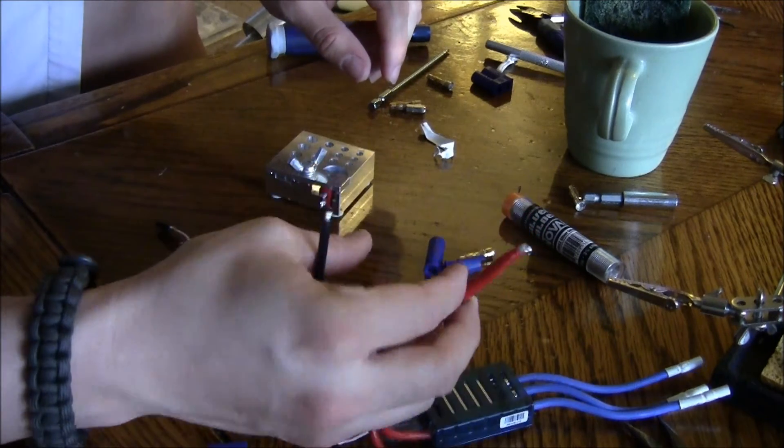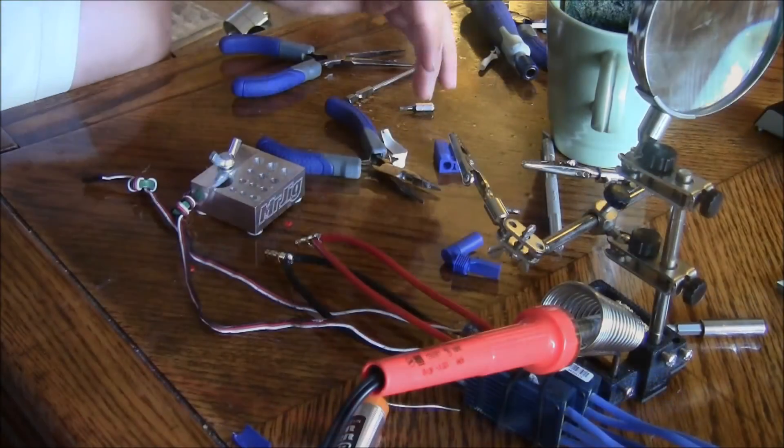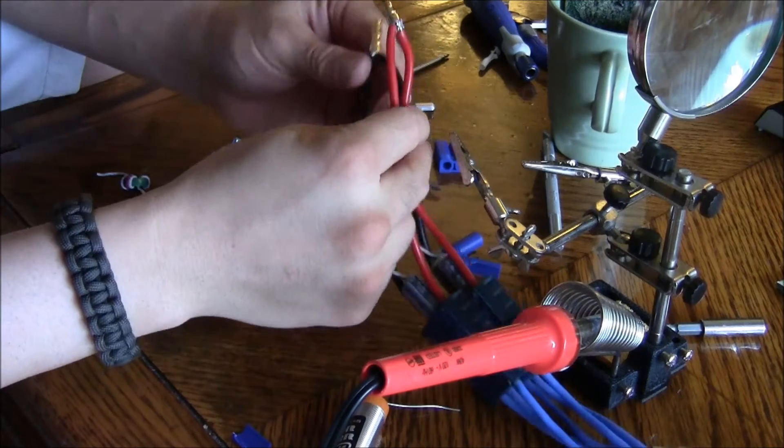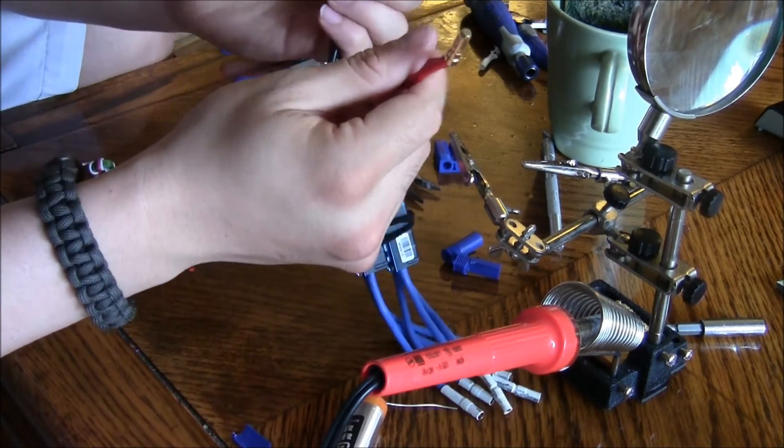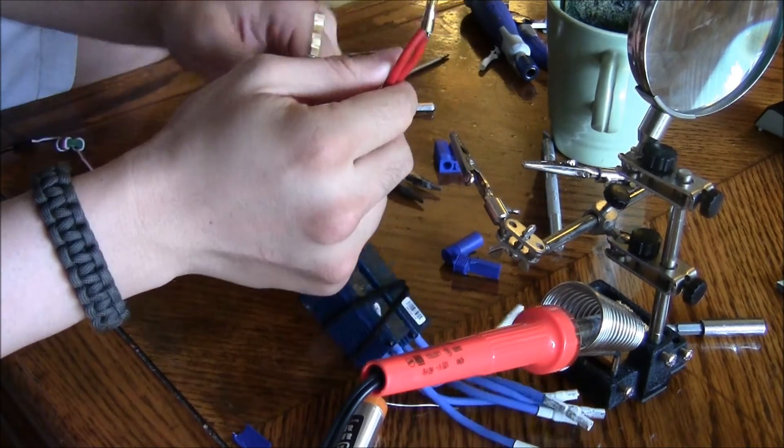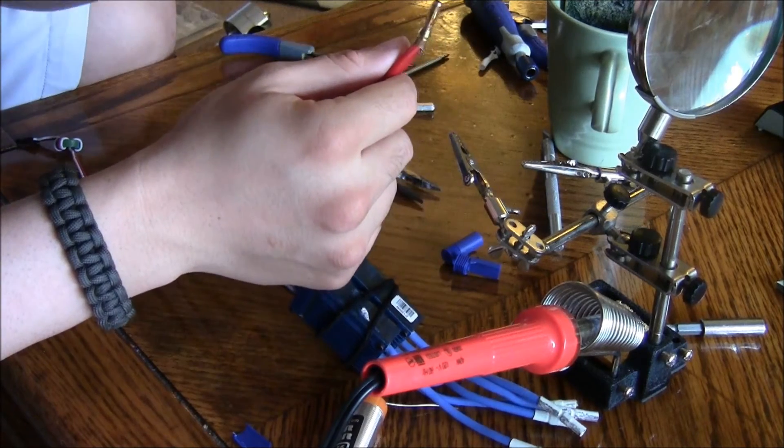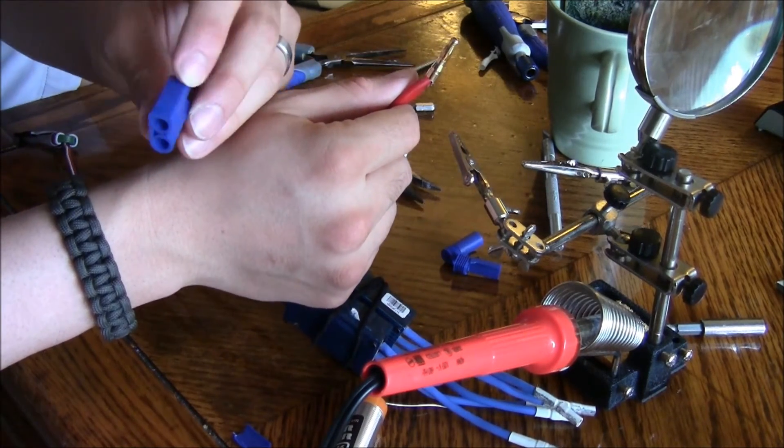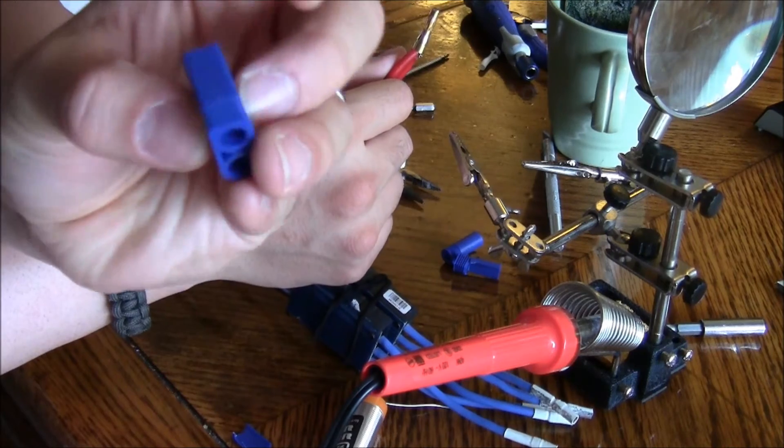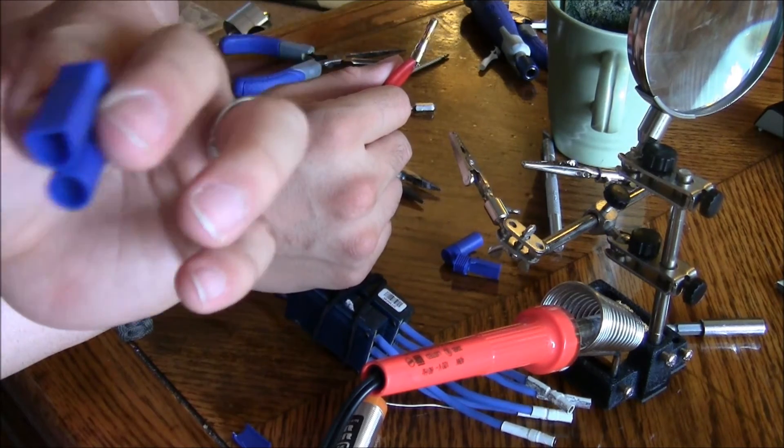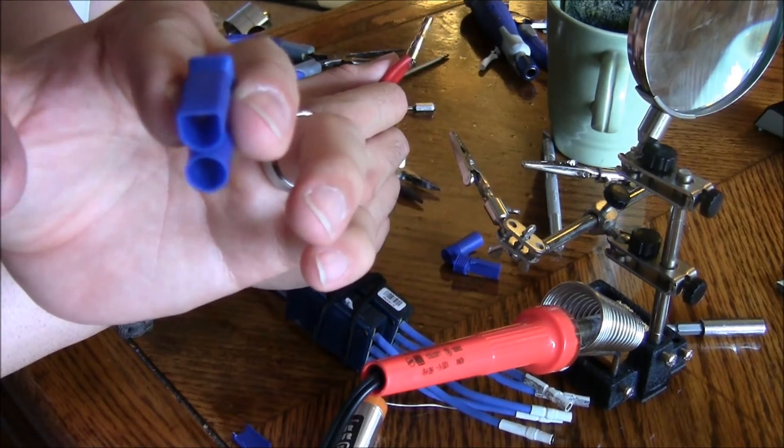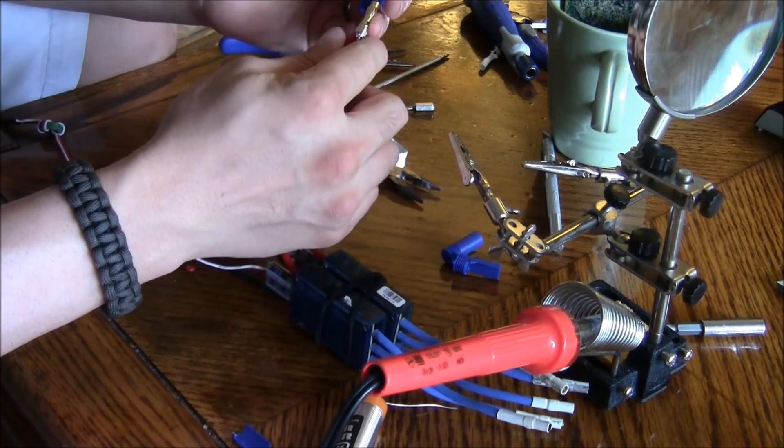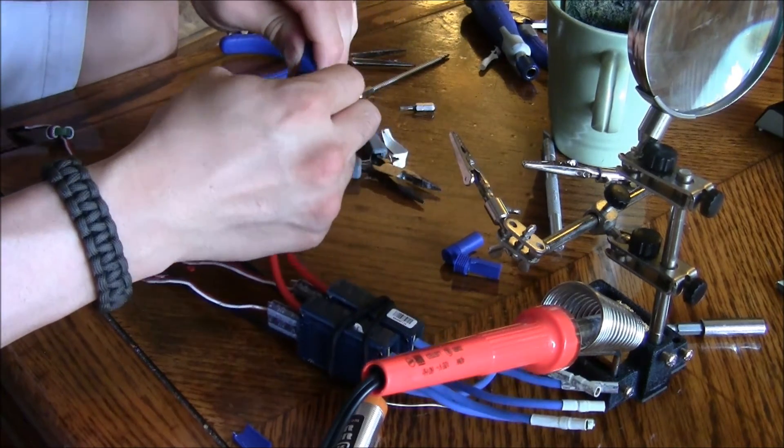Here we got the two connectors of the ESCs connected together. We're going to be putting it in this EC5 casing right here. The red piece goes into the flat part right there. We're going to shove that in there, and then take a little screwdriver.